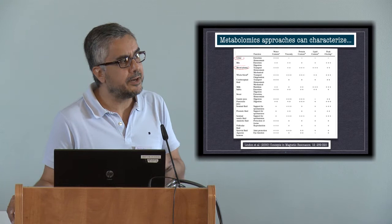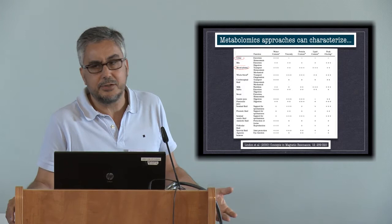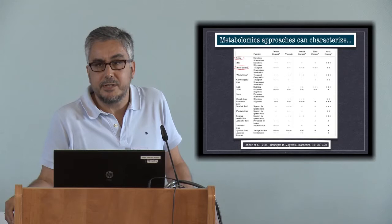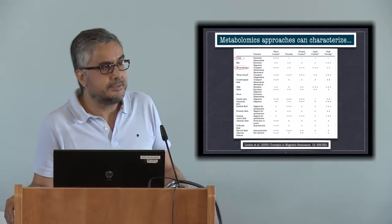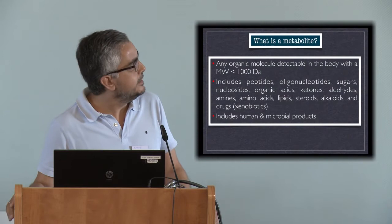A very interesting property of metabolomics approaches is that they can be used to analyze a wide range of biological samples. Although most studies are focused on urine, plasma, or serum samples, we have performed studies in sweat, tears, amniotic fluid, and CSF. You can think of any biofluid containing metabolites that can be analyzed using metabolomics. The advantage is that the techniques used allow the detection of metabolites in samples containing very different physical and chemical properties.